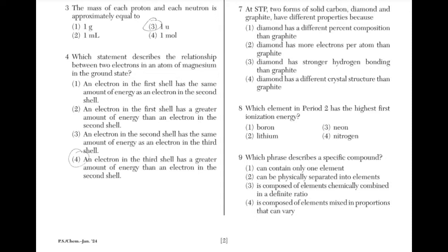At STP, two forms of solid carbon — diamond and graphite — have different properties because if two elements have different structural formulas, they will have different chemical properties. This is the same as answer choice 4: diamond has a different crystal structure than graphite.